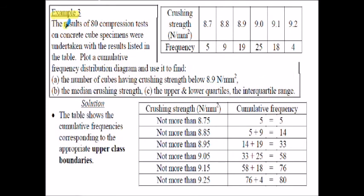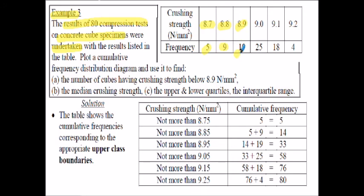In this example we have results of 80 compression tests on concrete cube specimens, with results shown in the table. For example, at the 8.7 N/mm² strength level, 5 cubes failed. At the 8.8 N/mm² strength level, 9 cubes failed. At 8.9 N/mm², 19 cubes failed, and so it goes on. We've got to plot a cumulative frequency distribution diagram and use it to find the number of cubes having a crushing strength below 8.9 N/mm², the median crushing strength, and the upper and lower quartiles and interquartile range.